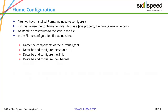We also have to configure the channel — properties such as the buffer, space, etc. Finally, we should bind the source and sink to the channel; otherwise, the Flume agent will not work. So typically, you define names for your source, sink, and channel, then have individual configurations for each, then bind the source and sink using the channel, and then the Flume agent can run.